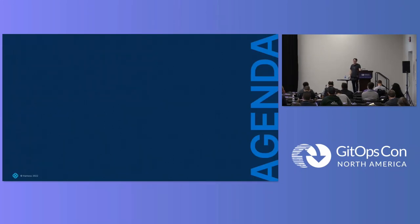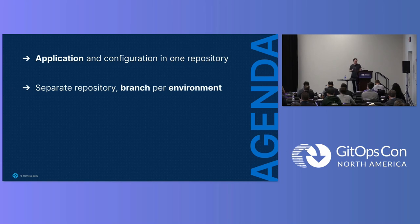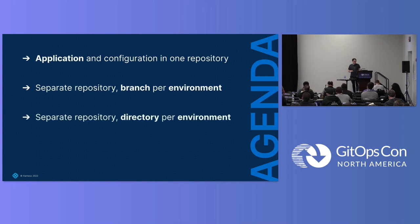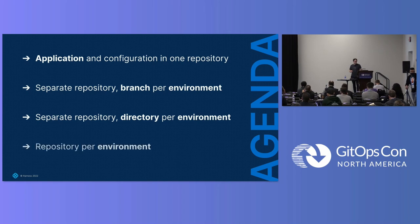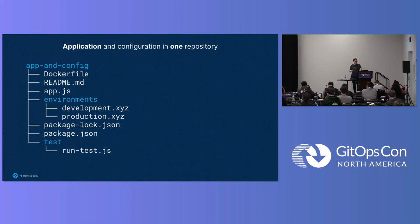I'm going to share four different methods that I've seen teams adopt. The first is an application where the application and configuration are in the same repository. Second, splitting up the configuration into its own repository with a branch per environment. Next, another repository but a directory per environment. And finally, splitting up into multiple repositories, one per environment.